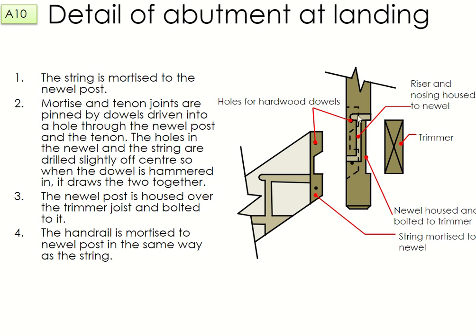So the string is fixed to the newel post using a mortise and tenon joint; the newel post and the trimmer are housed together; and the handrail is mortised into the newel post. Looking at the image: this is the newel post at the top of the stairs coming up to the second floor; the string is mortised in here to the newel post; the newel post is bolted or screwed to the trimmer — which is a piece of wood already fixed from doing your roofing; and the holes for the hardwood dowels are here. The riser and the nosing are also housed into the newel post at the top.